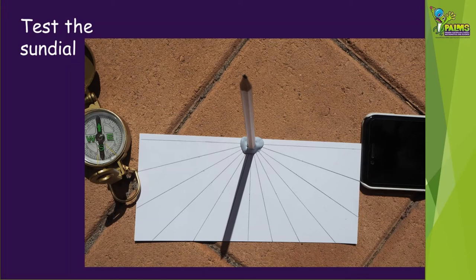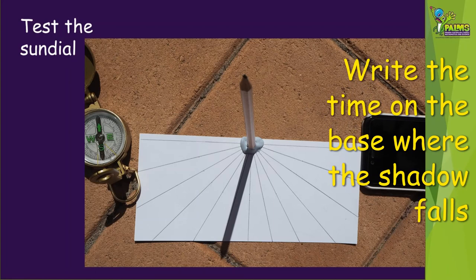Notice where the shadow of the pencil falls on the base and compare it to the time on a watch or clock. Come back and do this a couple of times during the day. Remember that each segment on the base represents a solar hour.